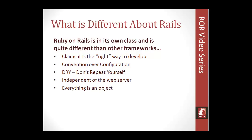Rails runs independent of the web server. You can run Rails on multiple types of servers, including Apache. It actually includes its own web server called WEBrick, so you can run a local Rails server on any computer. You don't need to have WAMP or anything like that — it just runs right on your machine.